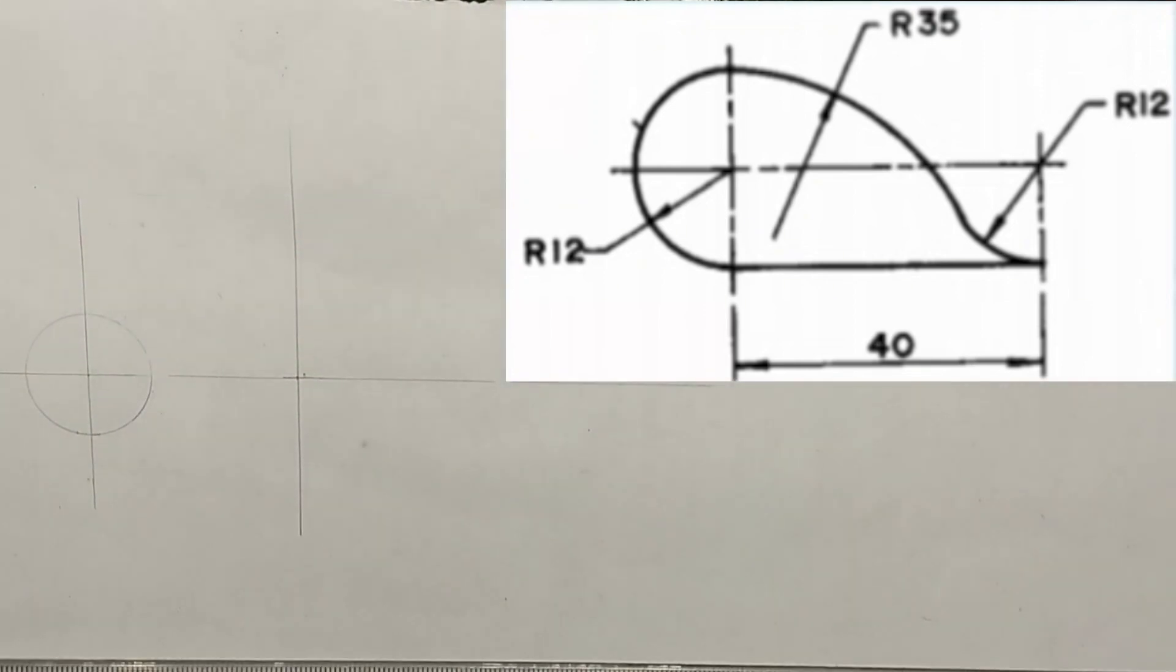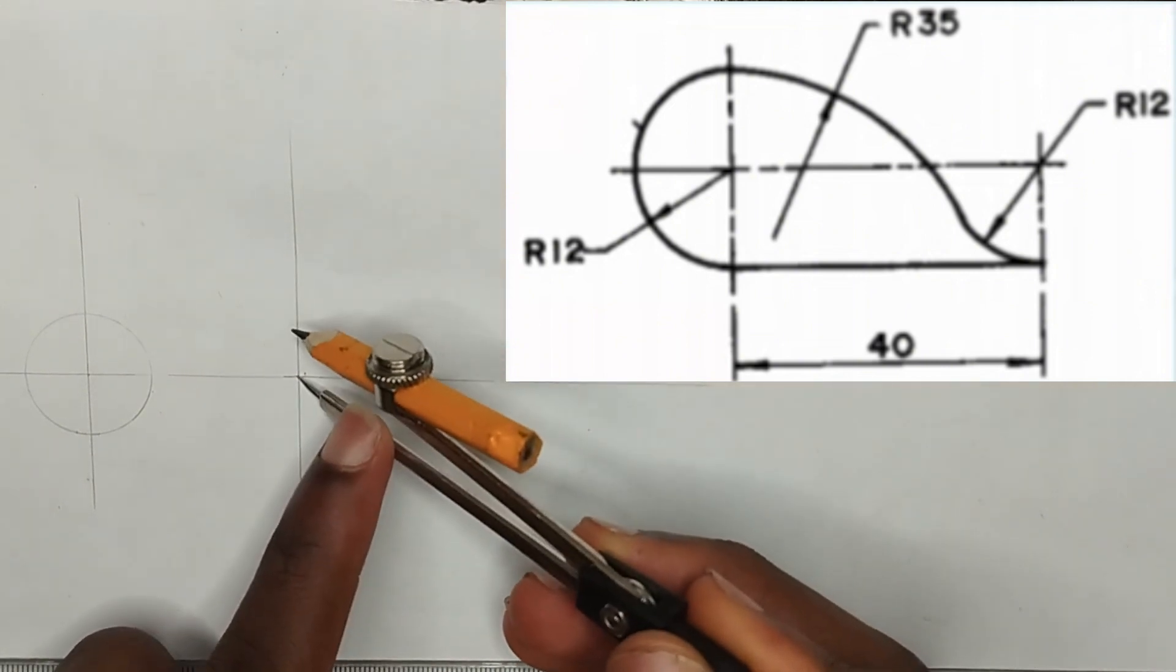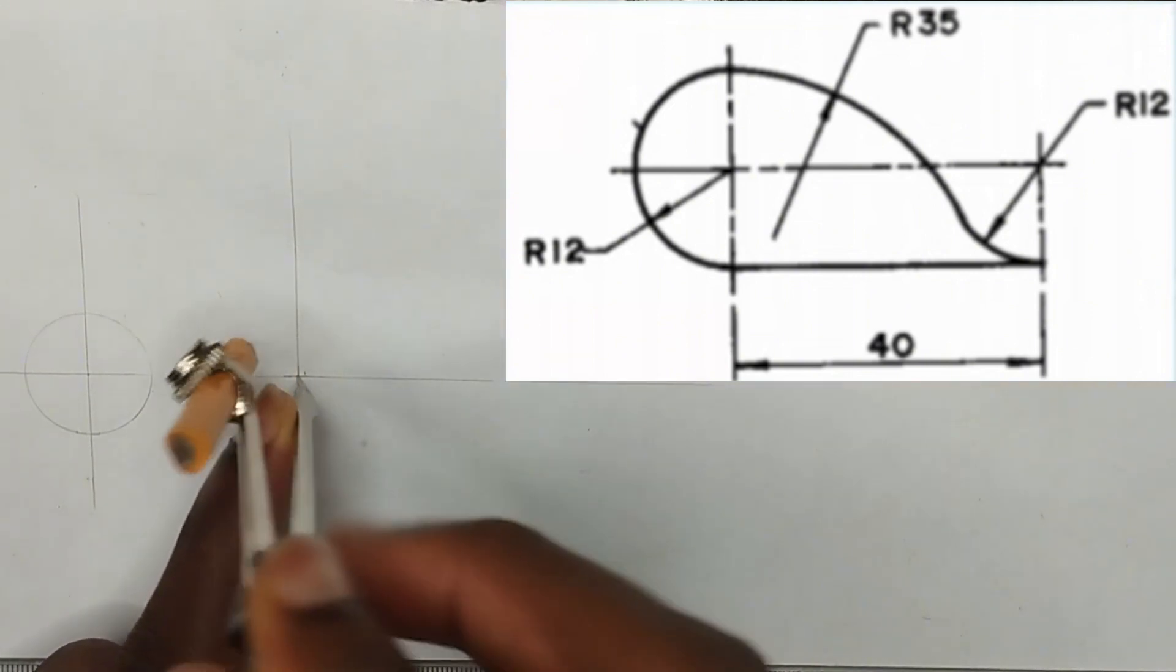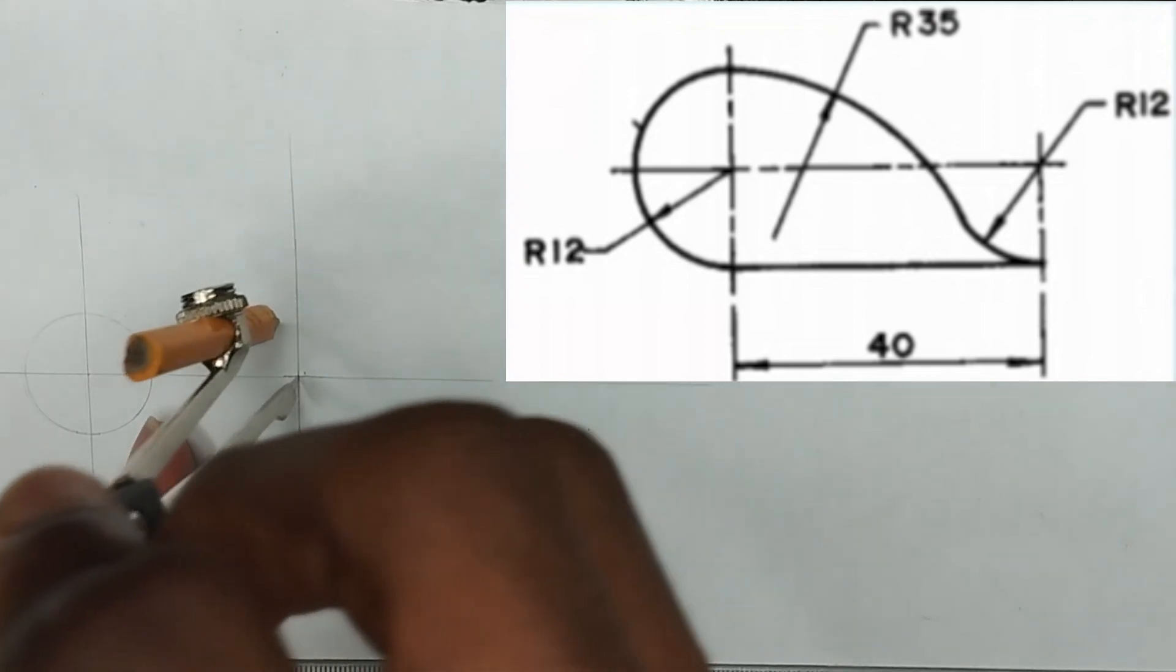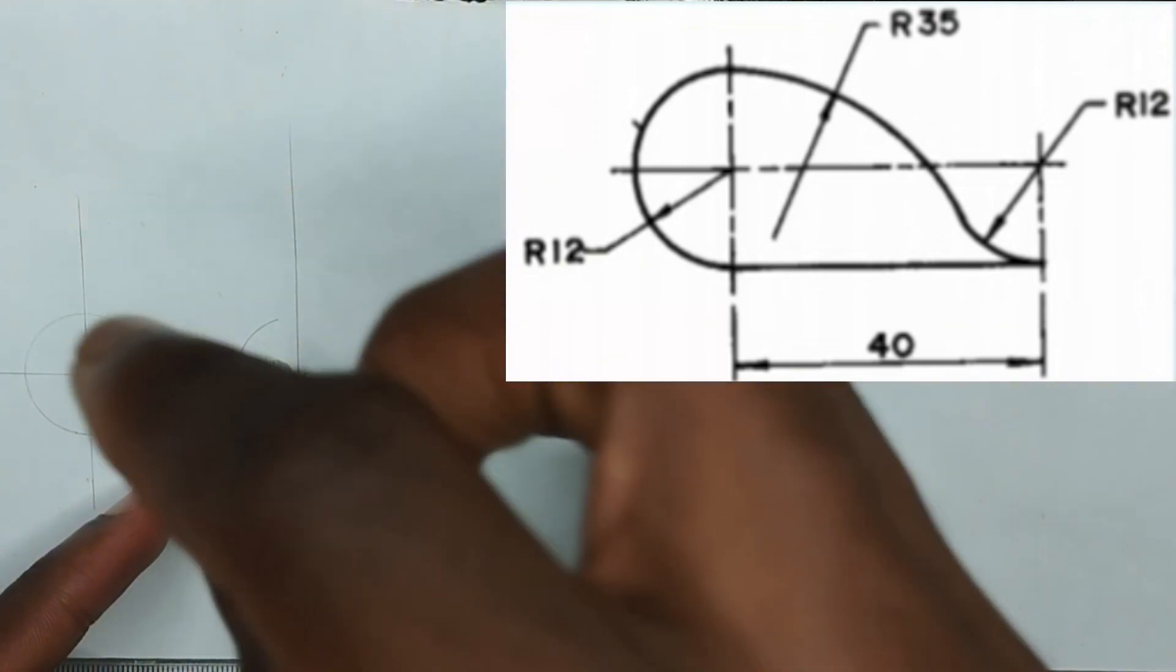Let's join this, in this manner. So now I'm going to pick radius of 12 mm also at this particular point. Then I'm going to draw like this. Making use of thin line please.